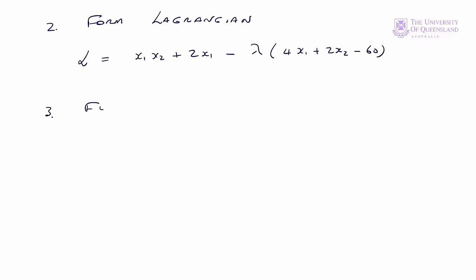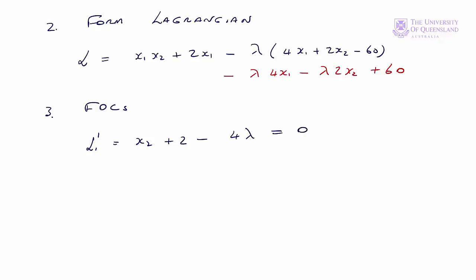The third step is to find the first order conditions. Differentiating the Lagrangian with respect to x1 gives L1 prime: treating x2 as a constant, the derivative of the first term is x2 plus 2, minus 4 lambda, set equal to zero. Differentiating with respect to x2 gives x1 minus 2 lambda equals zero. Our third condition is the constraint: 4x1 plus 2x2 equals 60. We number these equations 1, 2, and 3.